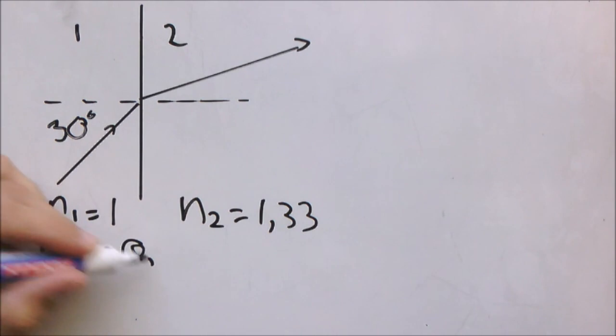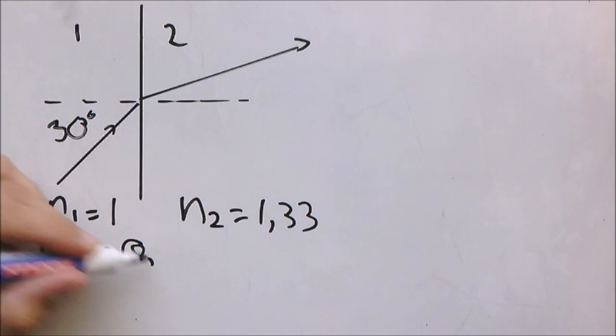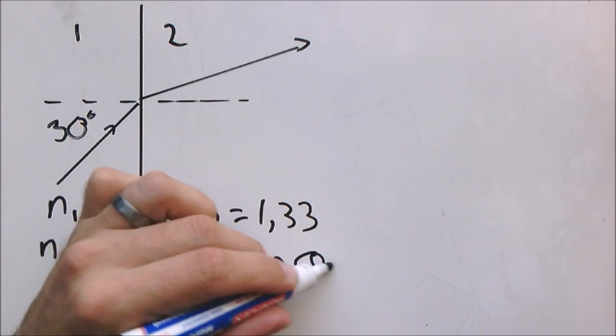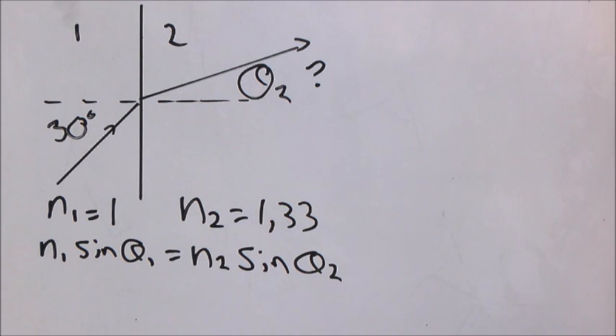Now we're going to apply Snell's law. So N1 sine theta 1 equals N2 sine theta 2. You can clearly see this is Snell's law, so theta 2 is the unknown in this case.